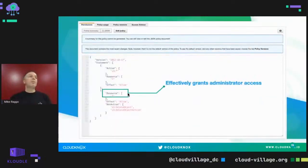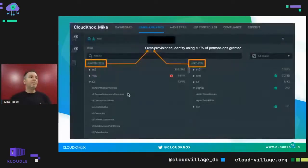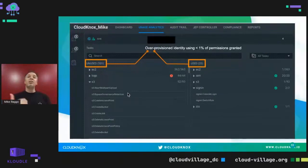A lot of this stems initially from default policies. You may have JSON policies with things like resource star and various permissions that are actually allowing broad or administrator access in the environment. But by looking at activity, we can better distinguish what permissions have been assigned versus what's actually being used, helping uncover all these unnecessary permissions being assigned to everybody in the cloud.